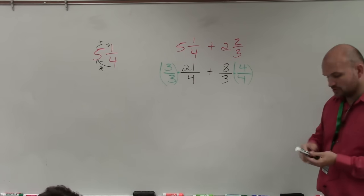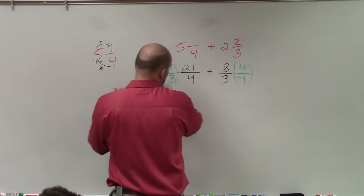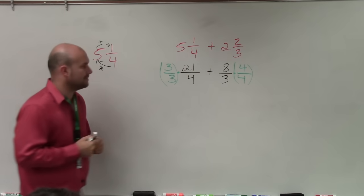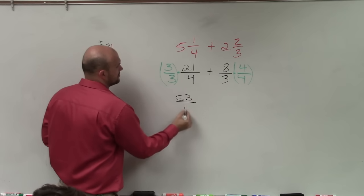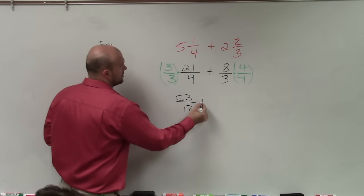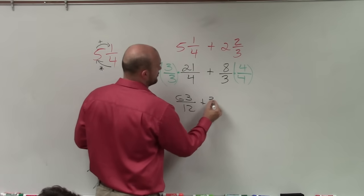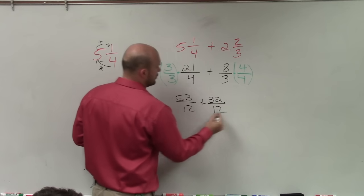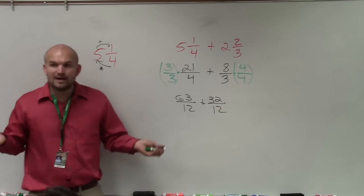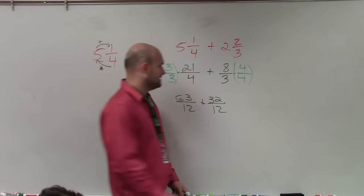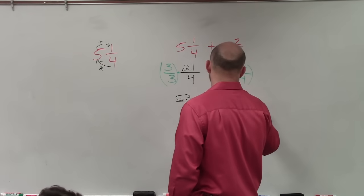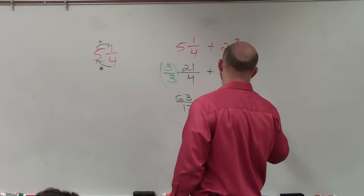So now, I'm going to need to multiply across. So when we multiply, we just multiply numerator times numerator, denominator times denominator. 3 times 21 is 63 over 12, plus 8 times 4 is 32 over 12. Now, I have common denominators, and I can add my numerators, which would be 95 over 12.